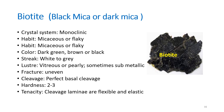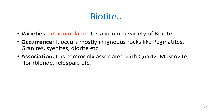Biotite is also known as dark mica. Crystal system: monoclinic; habit: micaceous or flaky. Color: dark green, brown, or black; streak: white to gray; luster: vitreous, sometimes pearly, or metallic due to its shining nature. Fracture: uneven; cleavage: perfect basal cleavage; hardness: 2 to 3; tenacity: flexible and elastic.